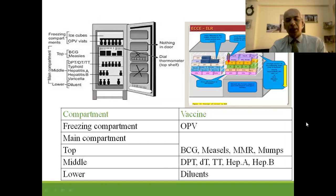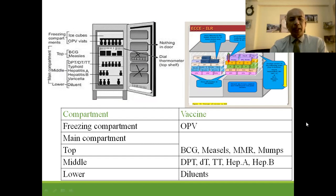Vaccines are stored using a routine refrigerator or an ILR (ice-lined refrigerator), also known as a deep freezer. In the freezing compartment, keep OPV. In the main compartment: top shelf — BCG, measles, MMR, and mumps; middle shelf — DPT, DT, TT, Hepatitis A and B; lower compartment — diluents. In the door, keep only water bottles to maintain temperature during electricity failure. Nothing else should be kept in the door.